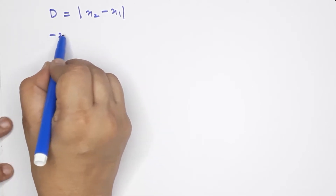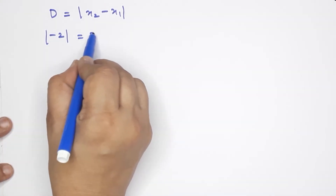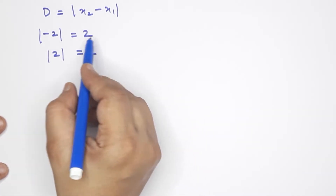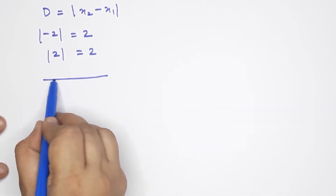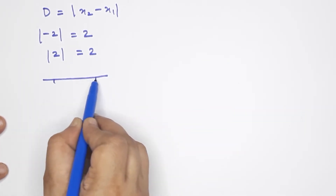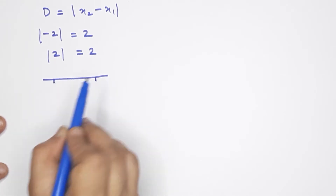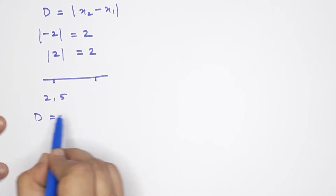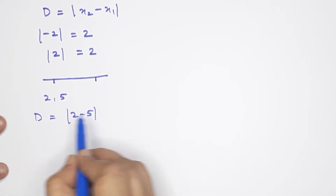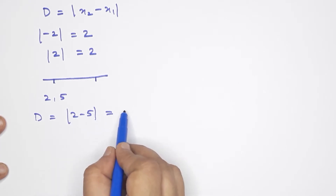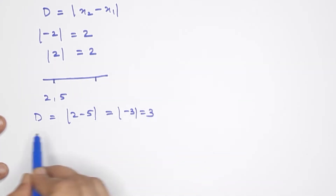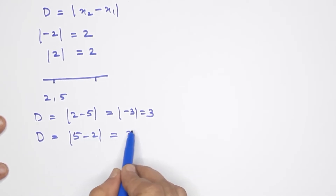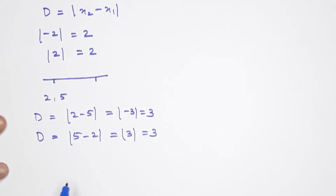For example, 1 minus 2: modulus of 1 minus 2 gives us 1 plus 2? Let me clarify how we find the distance between points on the number line. Take 2 and 5: the distance equals modulus of 2 minus 5. That gives modulus of negative 3, which equals 3. And modulus of 5 minus 2 also equals 3. So 3 equals 3 — correct.